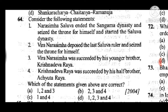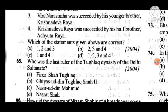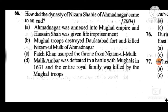Question 65: Who was the last ruler of the Tughlaq dynasty of the Delhi Sultanate? Answer is C, Nasiruddin Muhammad. Question 66: How did the dynasty of Nizam Shahi of Ahmadnagar come to an end? Answer is A — Ahmadnagar was annexed into the Mughal Empire and Hussain Shah was given life imprisonment.